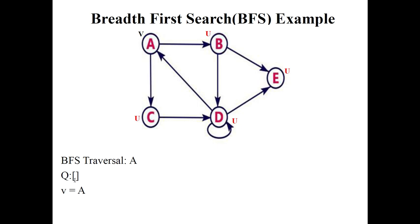Next step, dequeue A from Q. A has unvisited neighbors B and C. Mark them as visited. Two nodes are visited: B and C are inserted into Q.